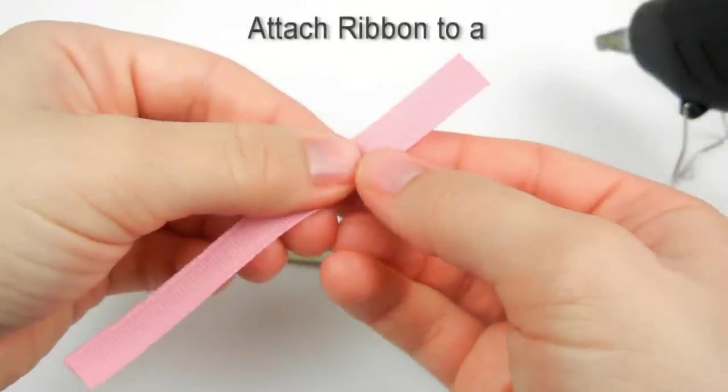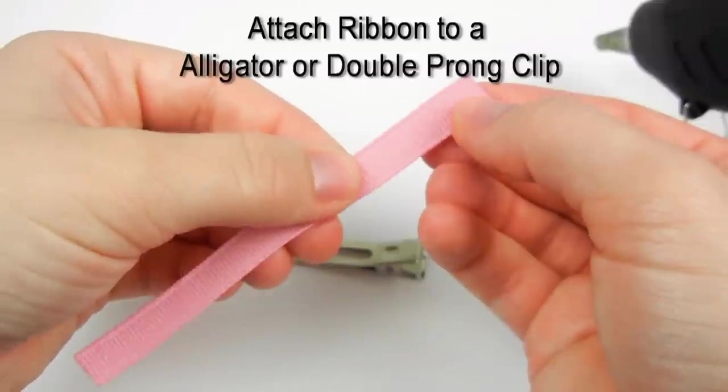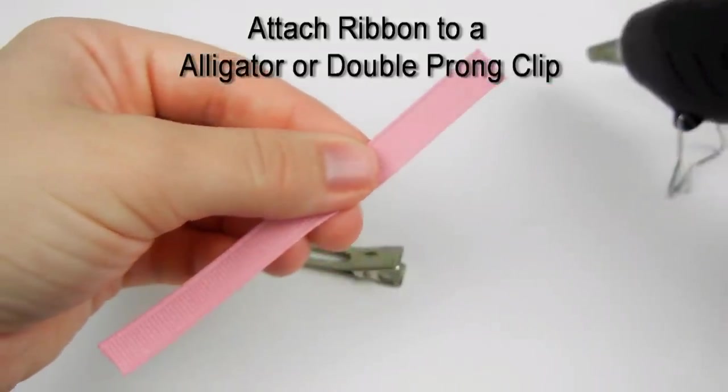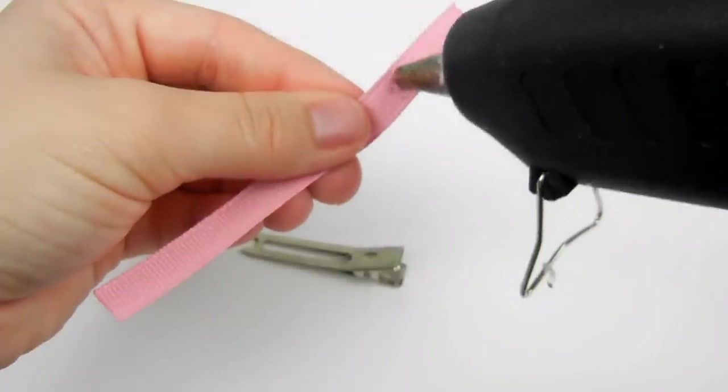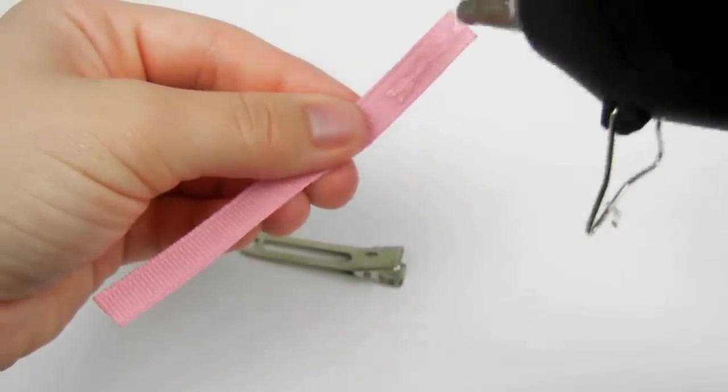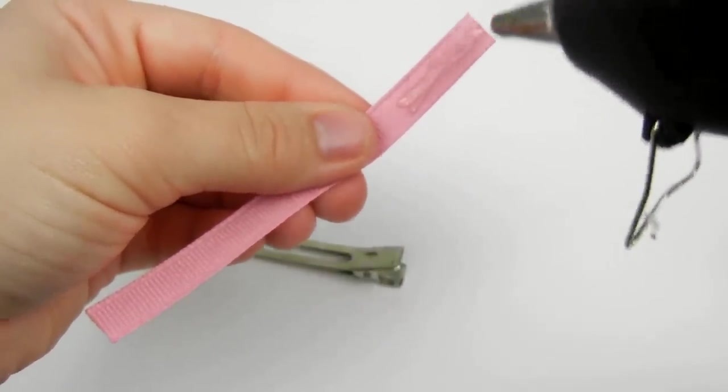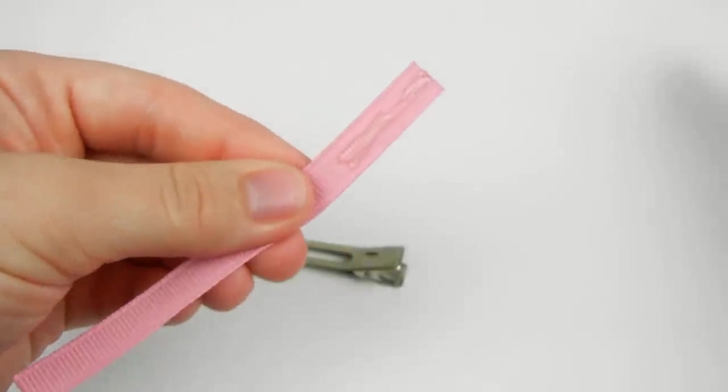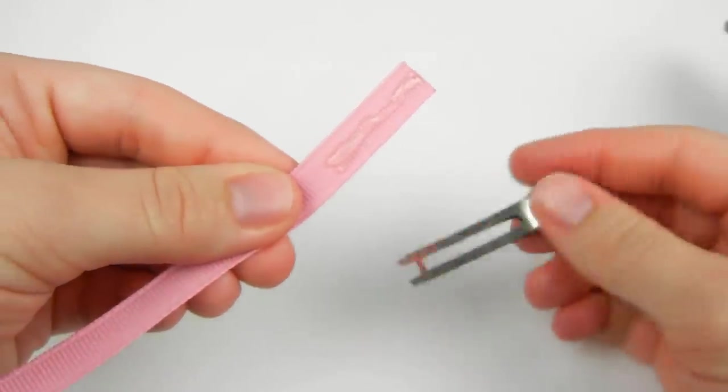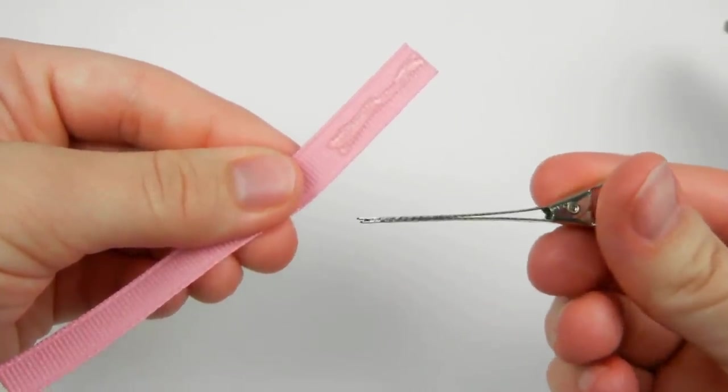You're going to get your ribbon and we're going to put glue on the end of the ribbon. If you do little circles like this, it usually takes care of the little strings. Now get your clip and you want the top part facing up.